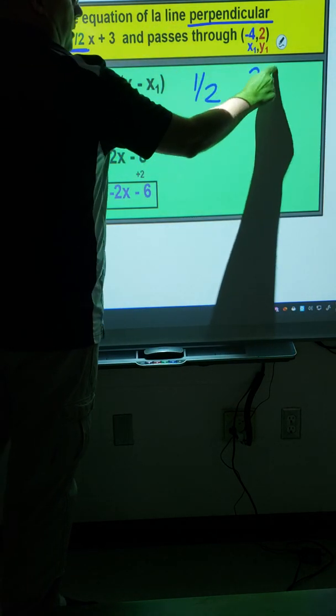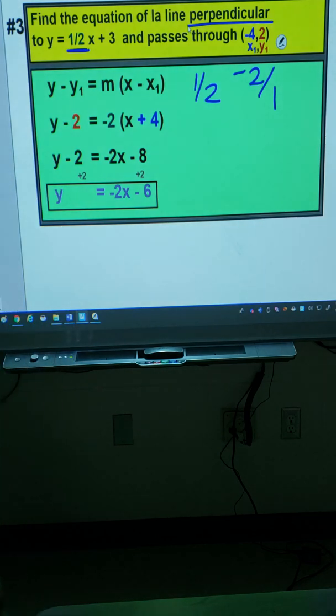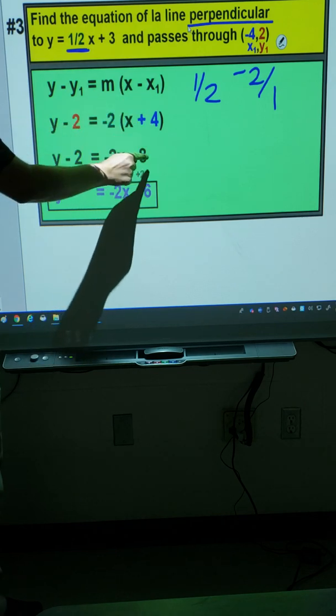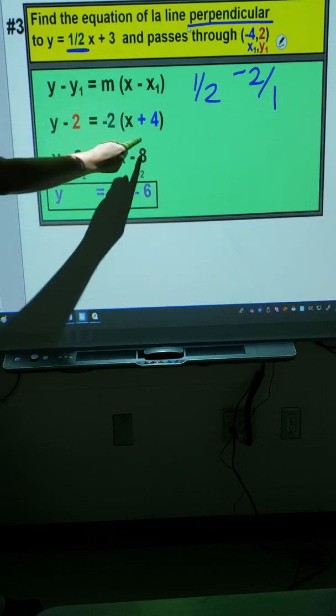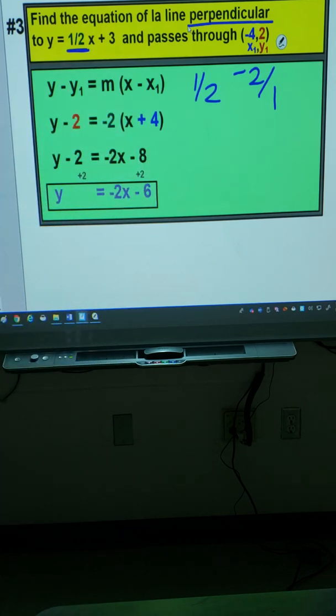We're going to flip the numbers, and then we're going to change the sign. So 1 over 2 becomes negative 2 over 1. And if you simplify that, you'll find that it's negative 2. But use your calculator if you're not sure. Once you're here, it's the same as the second unit. Distribute and move your number to the other side, and negative 8 out of 2 gives you negative 6.